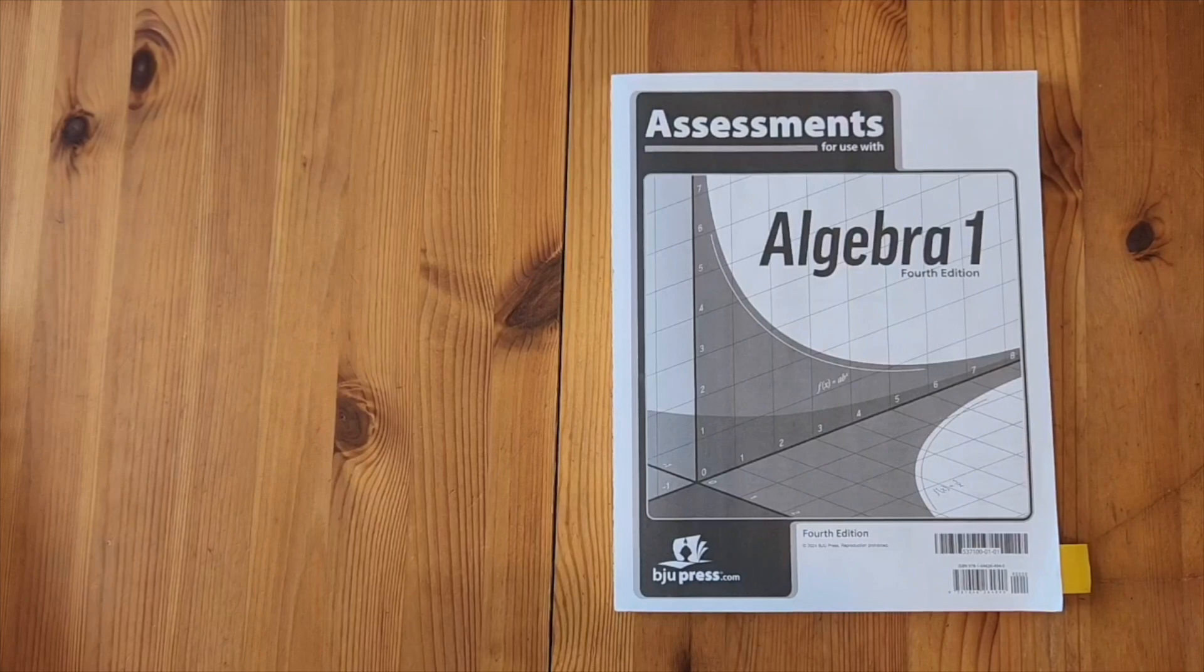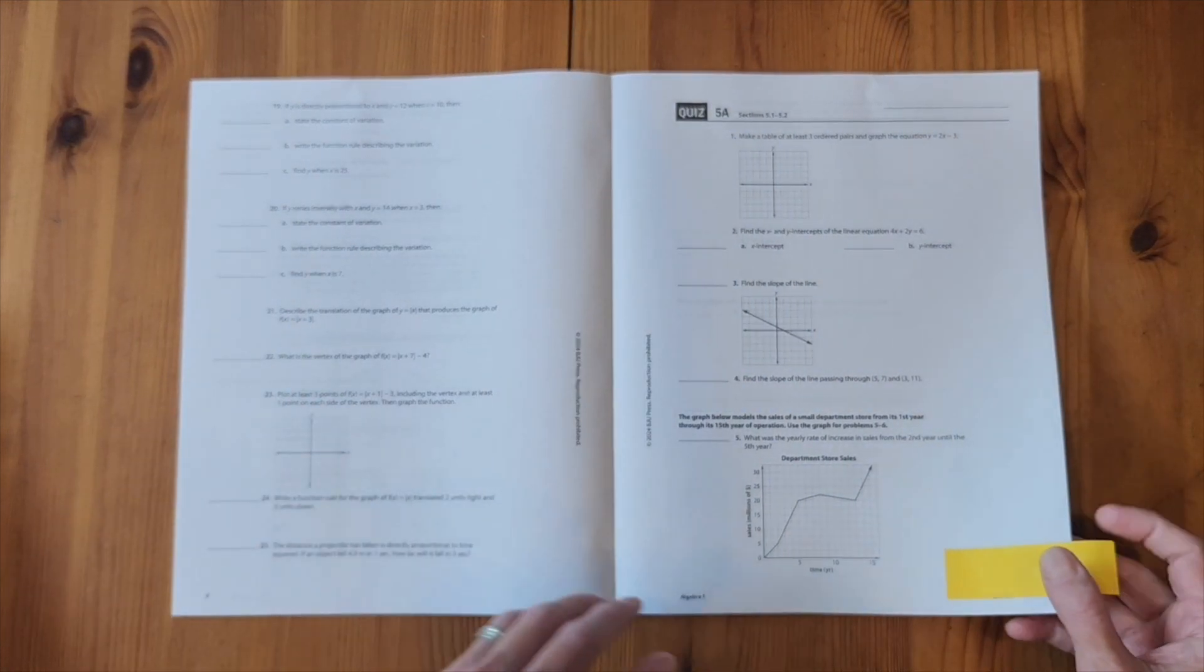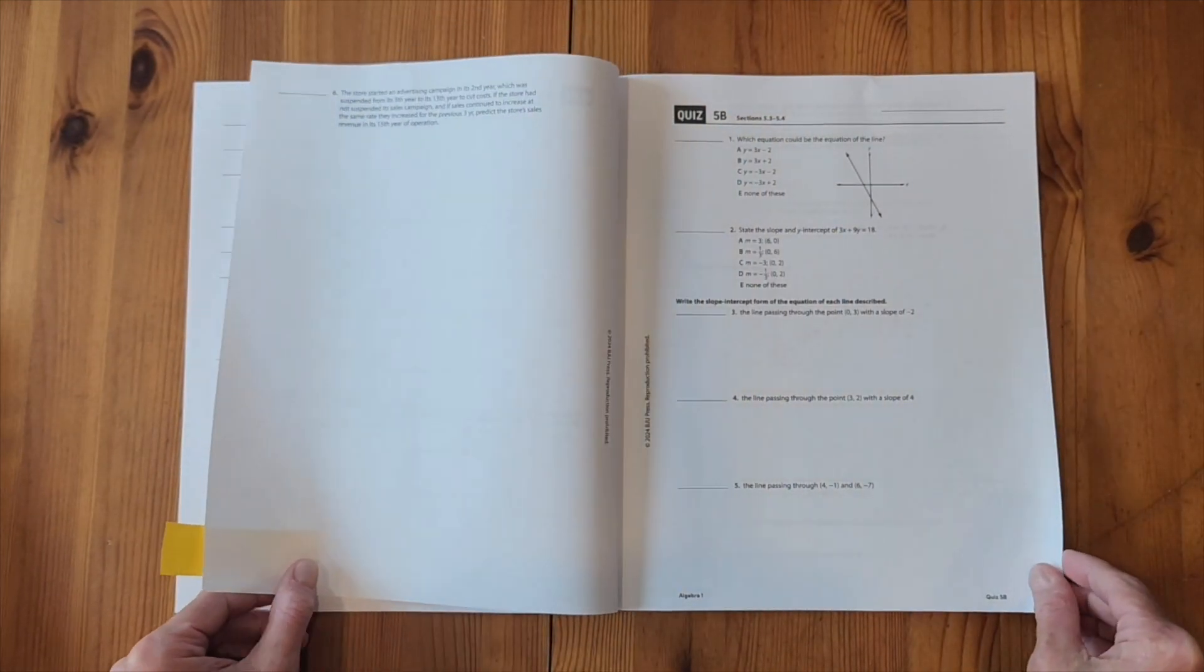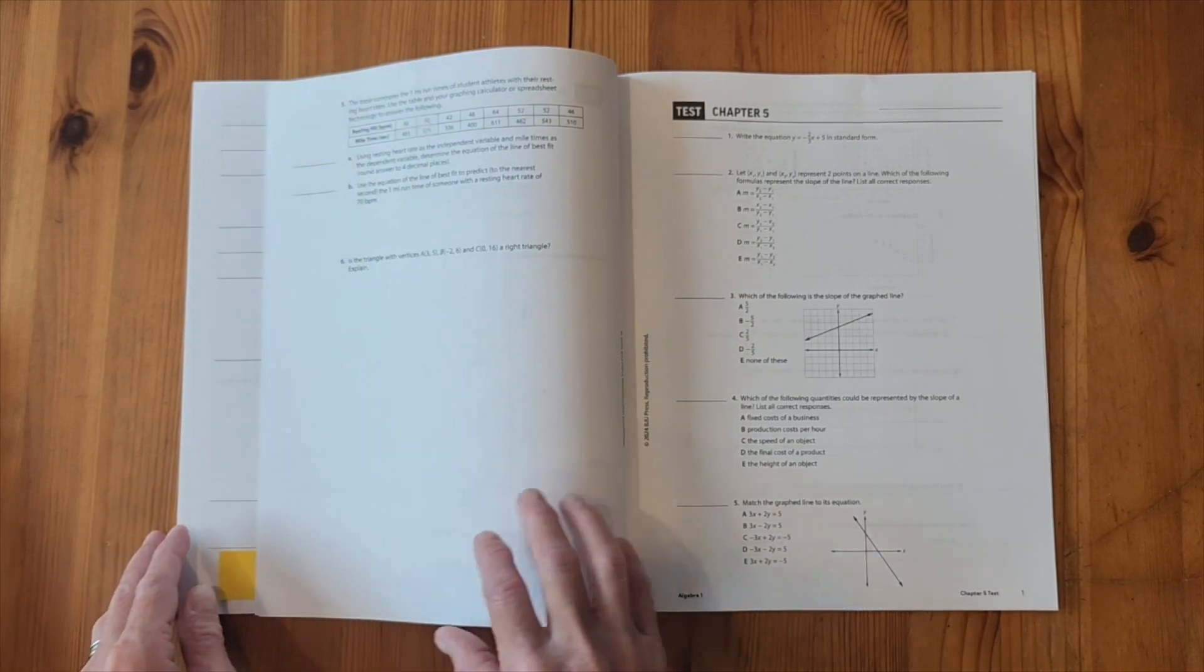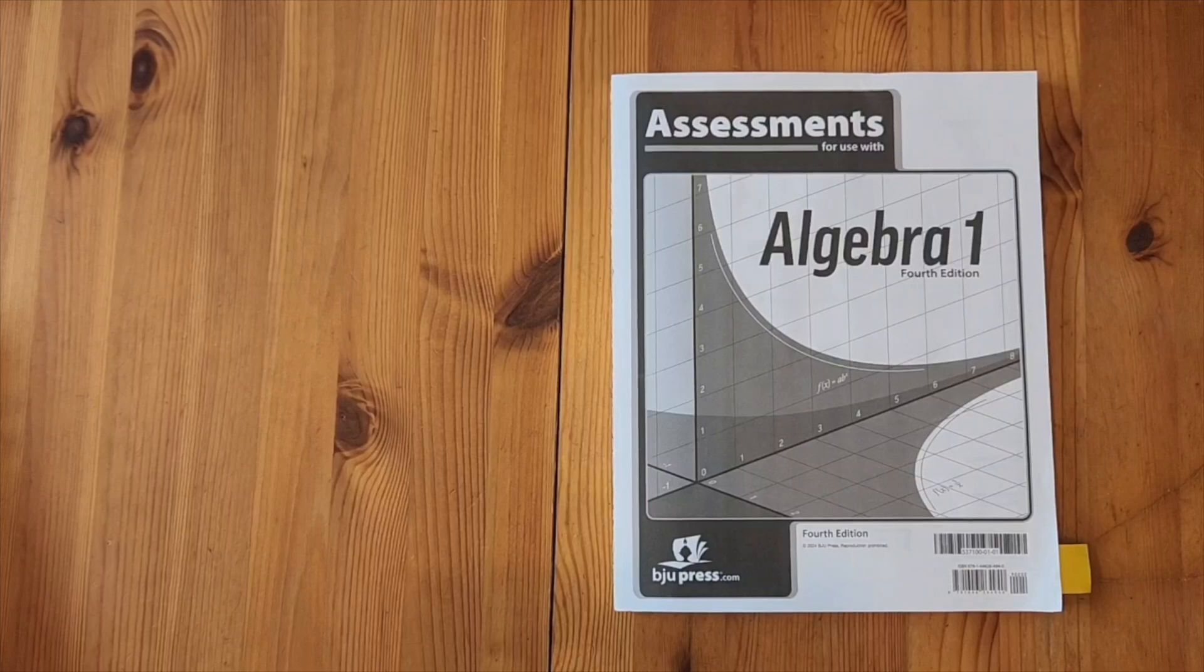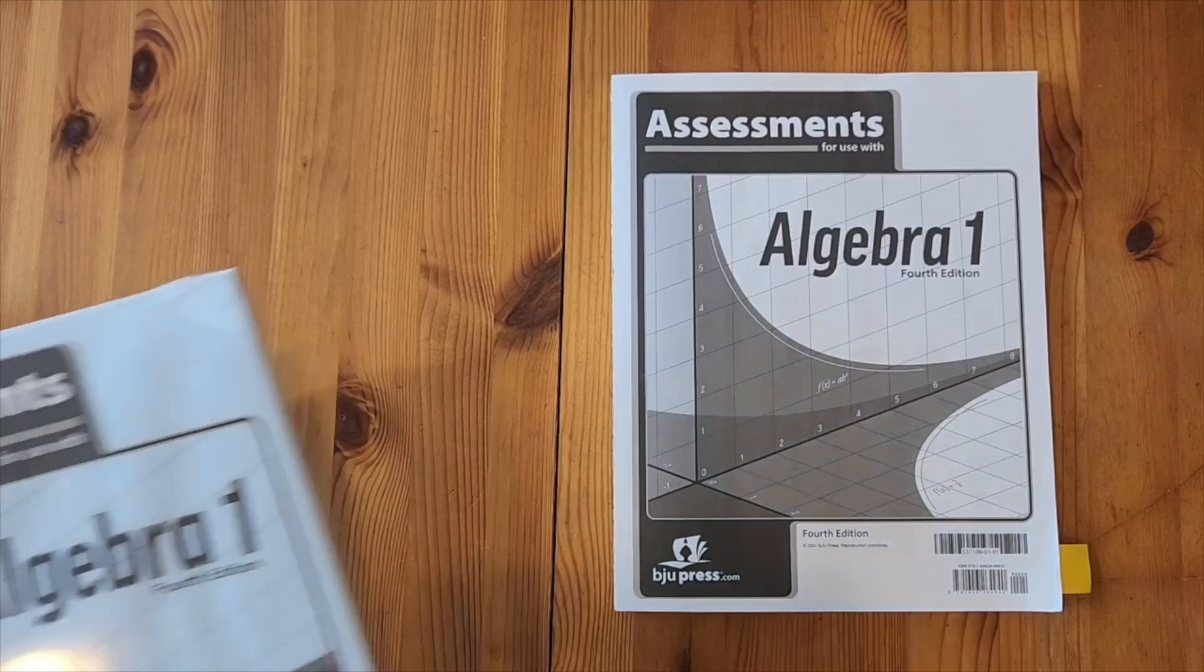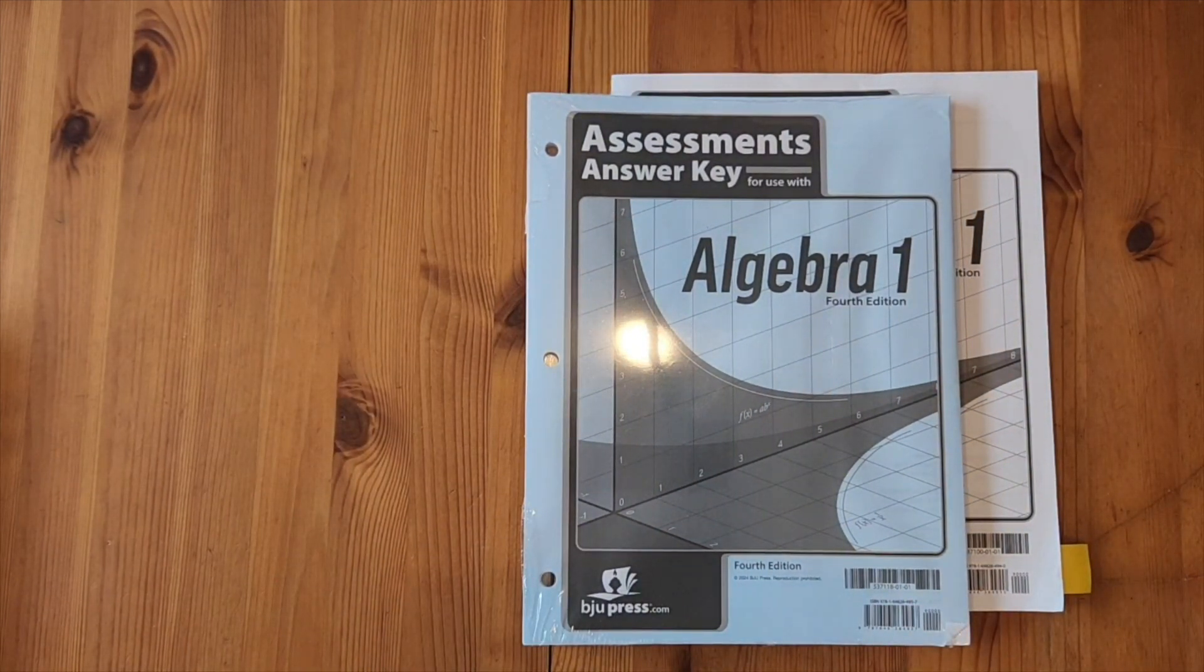This is the Algebra 1 assessment packet or test packet. So this is where you would go to find quizzes and tests for each chapter. So chapter 5 had three quizzes, 5A, 5B, and 5C, and then a test for chapter 5. As your child was ready for each assessment, you would just tear the page out of the packet and hand it to them to write on. This is the answer key to that assessment packet in which you would find all the answers for those tests and quizzes.